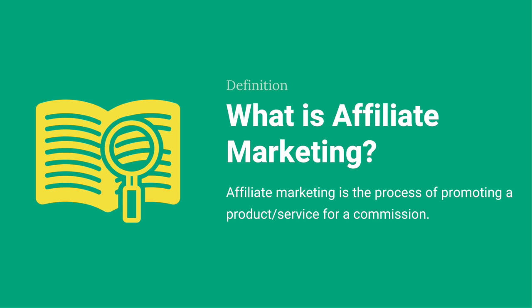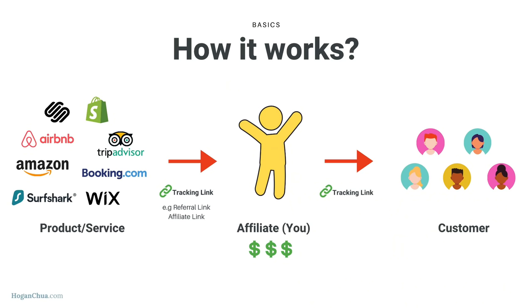For example, if the house price is a million dollars and you get two percent commission, that's around twenty thousand dollars — that's your commission. Affiliate marketing is essentially the same thing but online. You, the affiliate, sign up for an affiliate program. You can join the affiliate programs of many products and services you've already used.